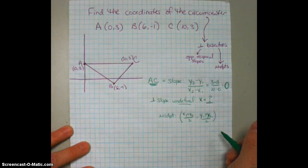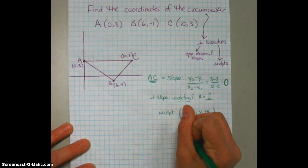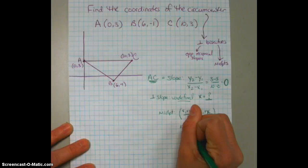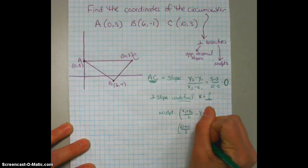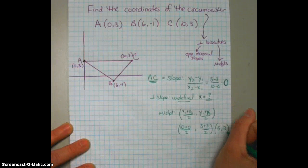So I'm going to substitute in my values. We're going to get x's, so it's 10 plus 0 over 2, comma, 3 plus 3 over 2. So the midpoint is at the point (5, 3).